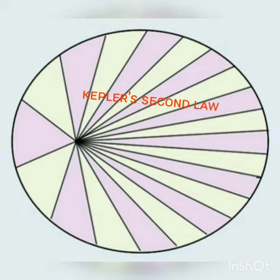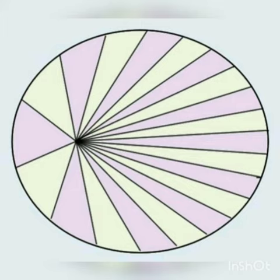Next, Kepler's 2nd law — the law of equal areas. Kepler's 2nd law states that the radius vector drawn from the sun to the planet sweeps out equal areas in equal intervals of time.